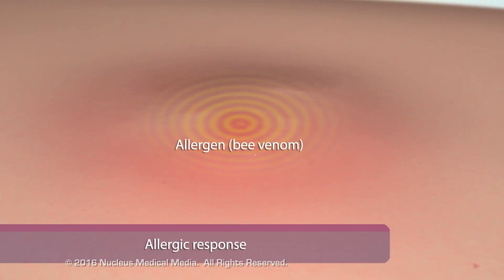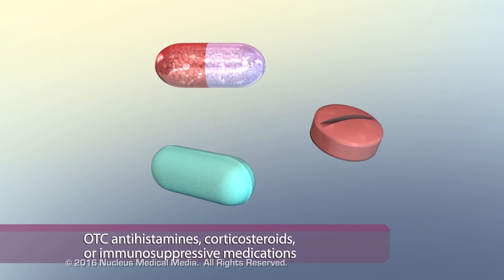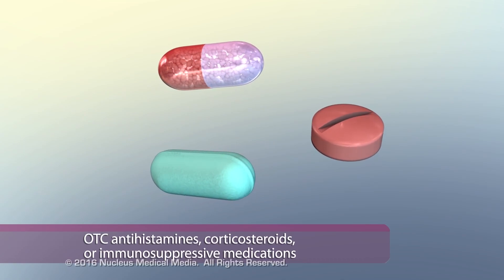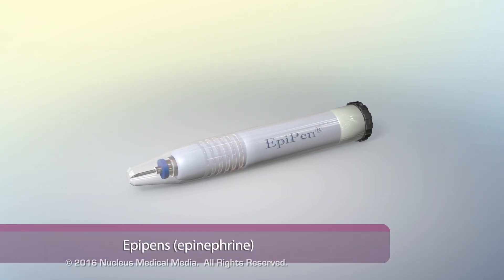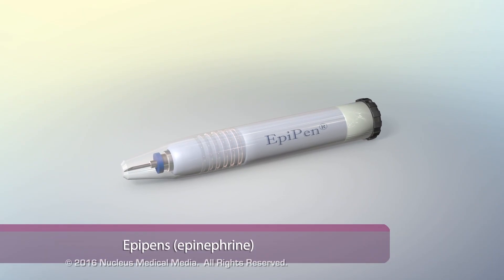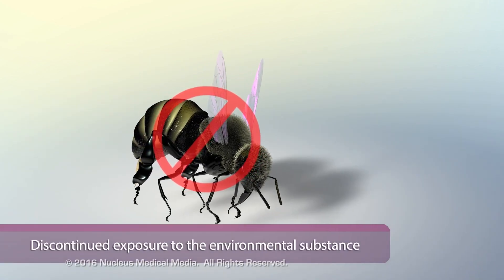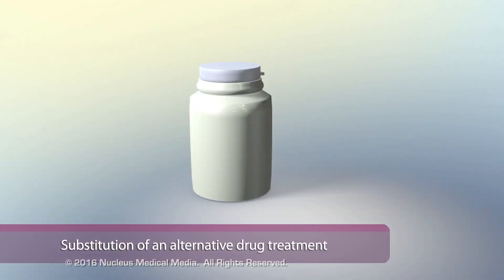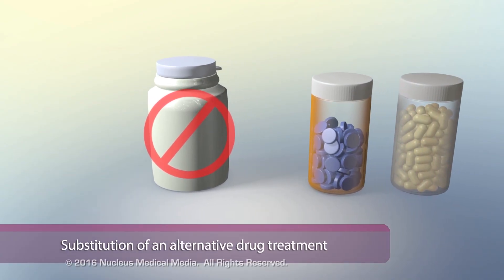Treatment of type 1 hypersensitivity includes treatment of mild symptoms with over-the-counter antihistamines, corticosteroids, or immunosuppressive medications, and treatment of severe reactions and anaphylaxis with an EpiPen, along with discontinued exposure to the environmental agent. If the hypersensitivity is in response to a necessary drug treatment, substitution with another agent is recommended.